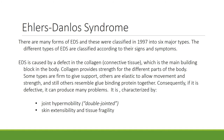There are many forms of EDS and they were classified in 1997 into six major types. The different types of EDS are classified according to their signs and symptoms. EDS is caused by a defect in the collagen or connective tissue, which is the main building block in the body.